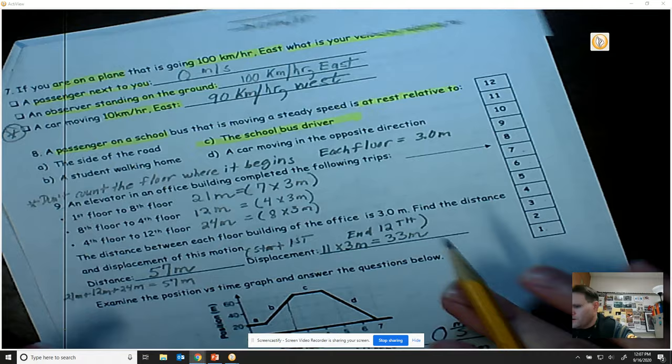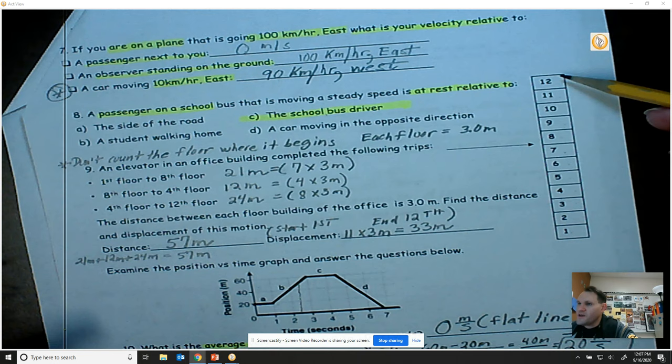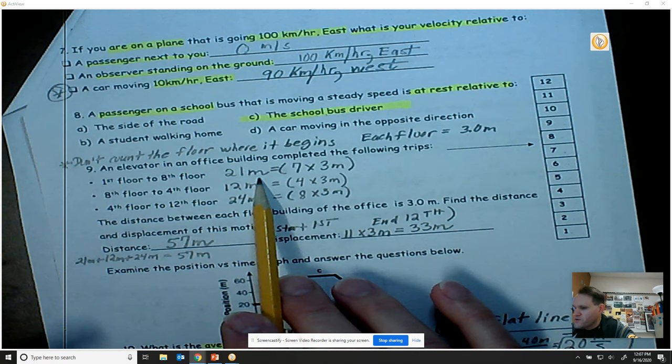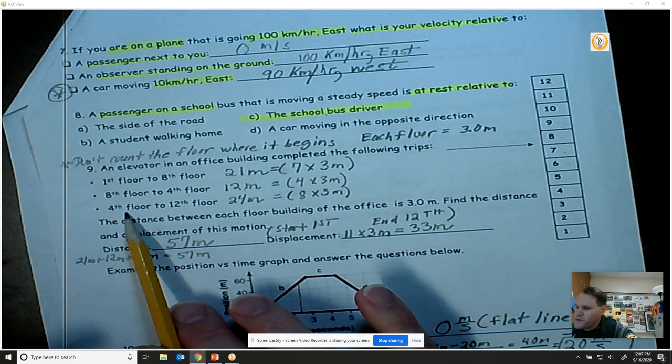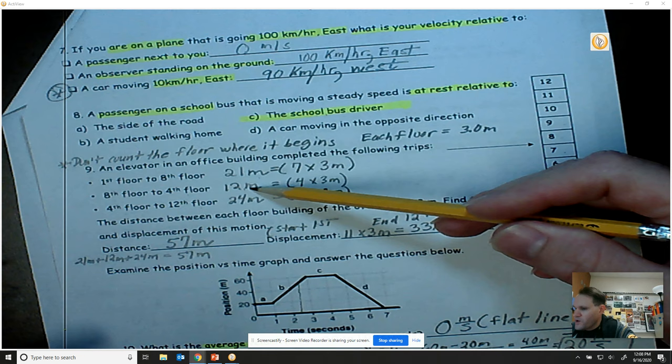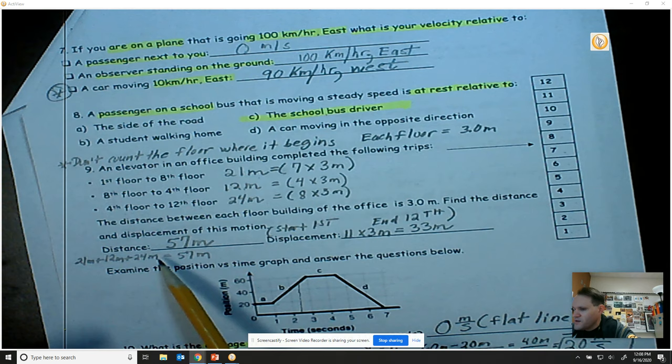All right, for number nine, an elevator in an office building looks like as follows. It has 12 floors, and when you're working through these, don't count the floor where the elevator is already at, where it begins. So from the first to the eighth floor is going to be 21 meters. From the eighth down to the fourth floor is going to be 12 meters, and the fourth to the 12th floor is going to be 24 meters. So you're going to find the distance by adding up all these individual distances, 21 plus 12, which is 33, 33 plus 24, which is going to be a distance of 57 meters.